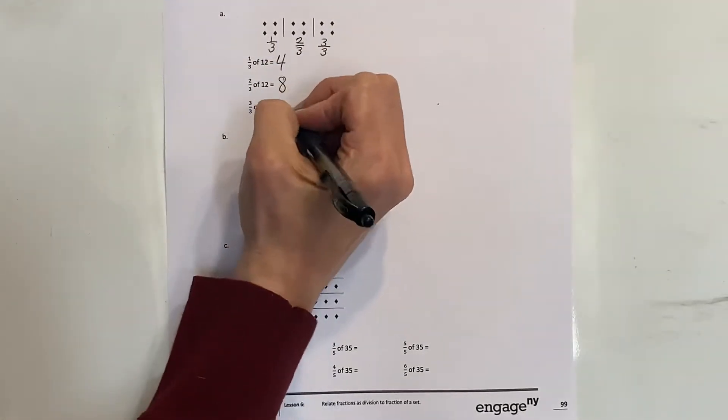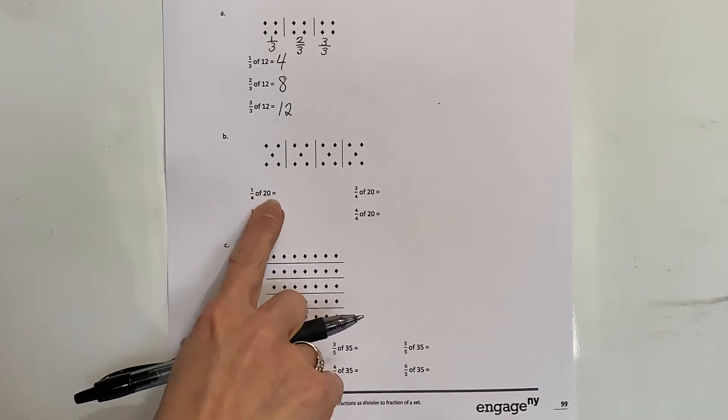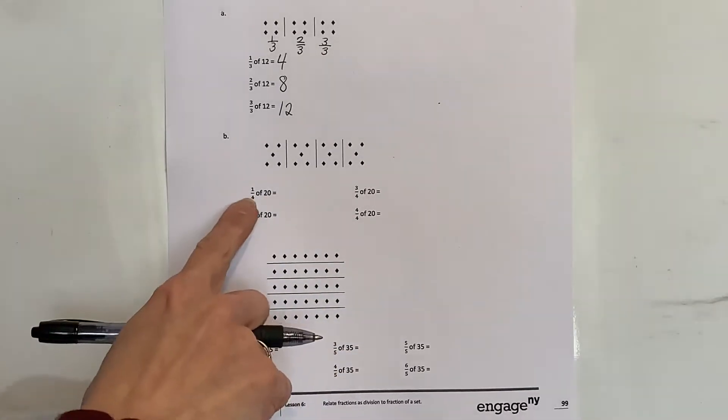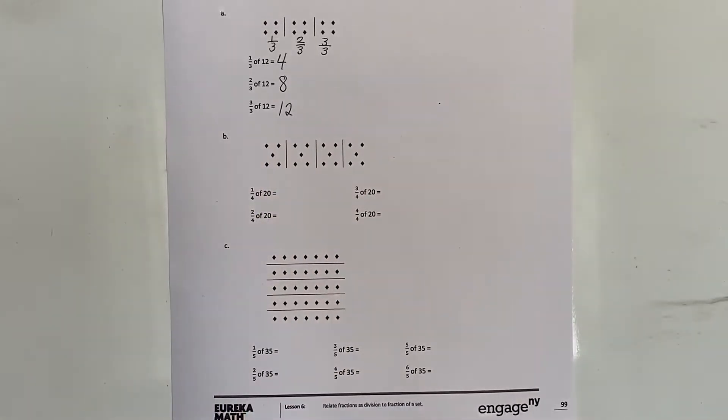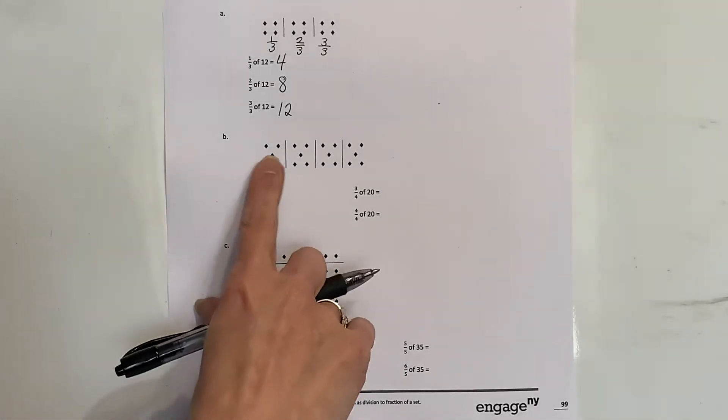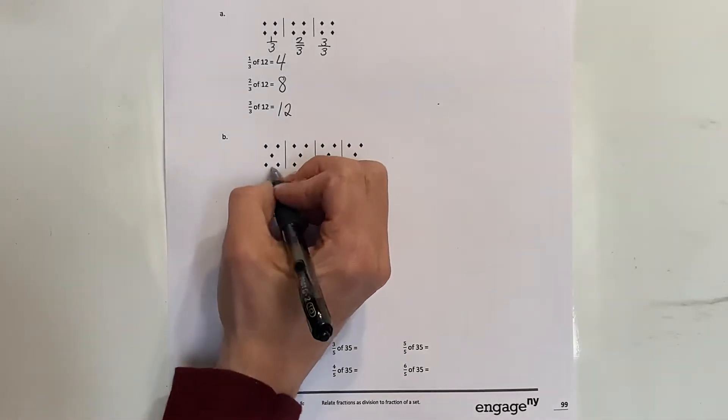One-fourth of twenty - I know I'm going to be putting them in four equal groups, so I've got five in each group. I've got one, two, three, four equal groups - that's what I need according to my denominator.